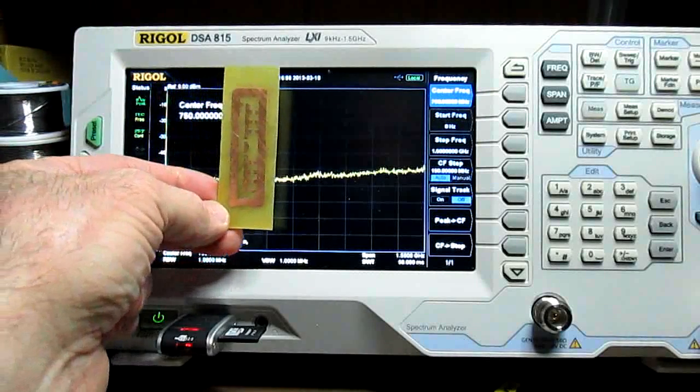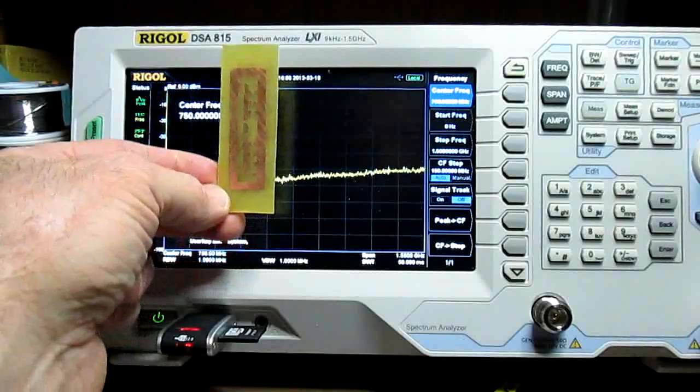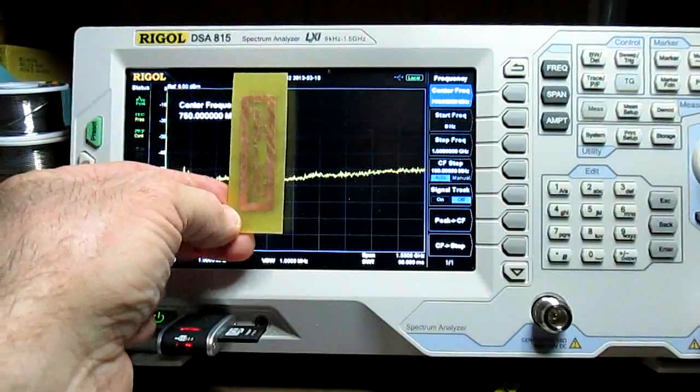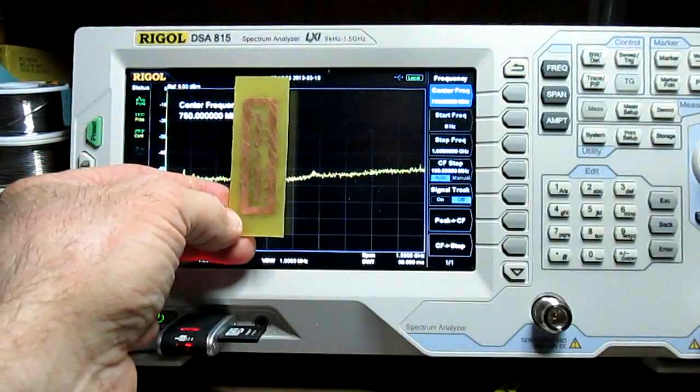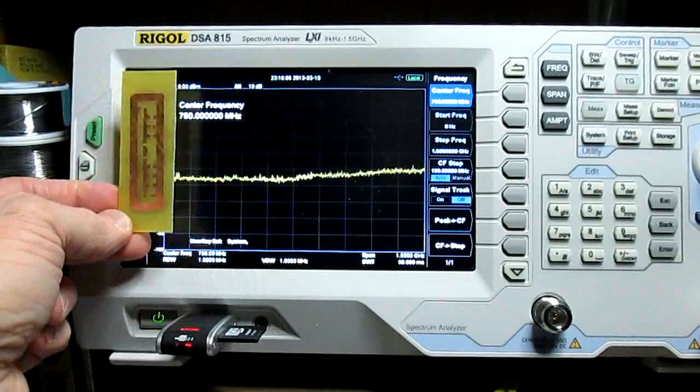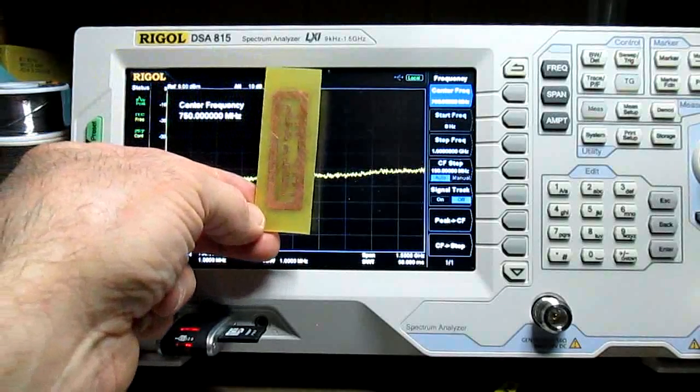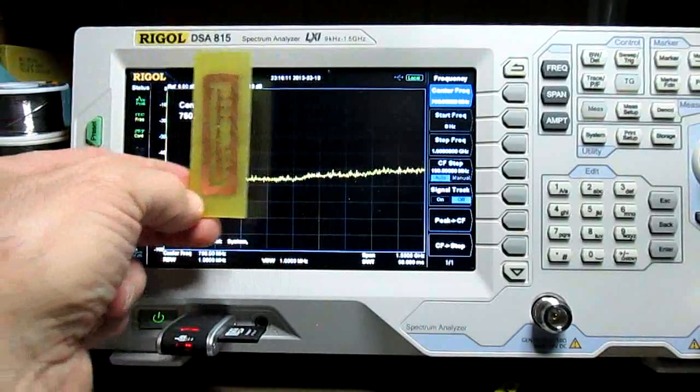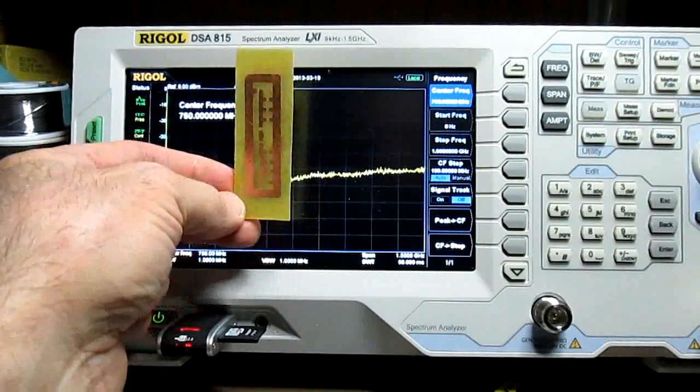As it's sweeping, say five, ten, fifteen, twenty, and at twenty there's a signal, it'll see that signal. Now if it's going five, ten, fifteen, twenty and a signal pops up at fifteen, well this is at twenty, you're not going to see it because it's not in that window.